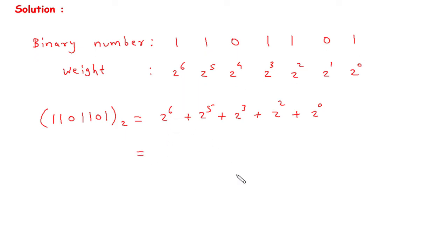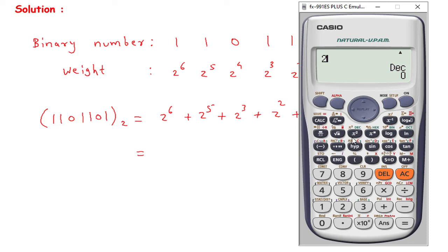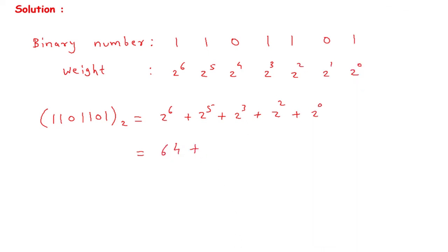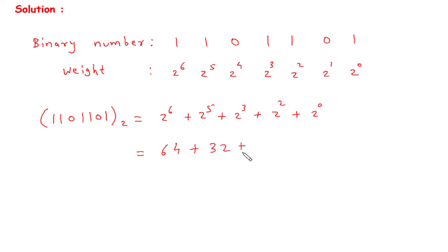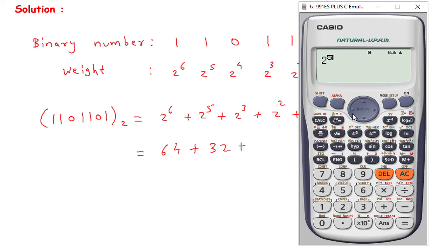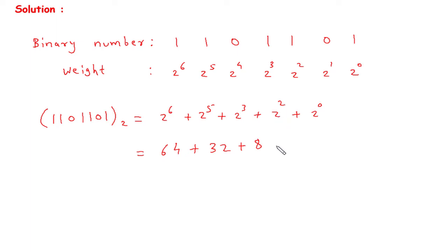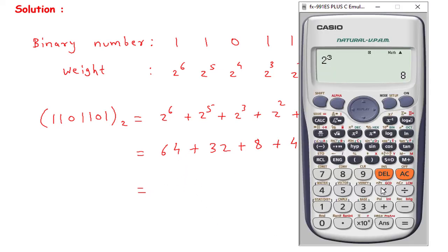Now this will be: 2 raise to the power 6, that is 64, then plus 2 raise to the power 5, that is 32, then plus 2 raise to the power 3, that is 8. 2 raise to the power 2 is 4, and 2 raise to the power 0 is 1.